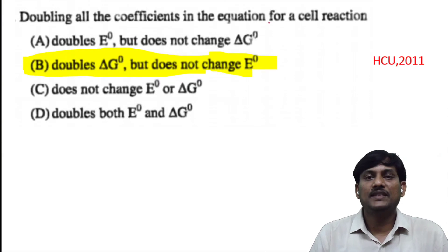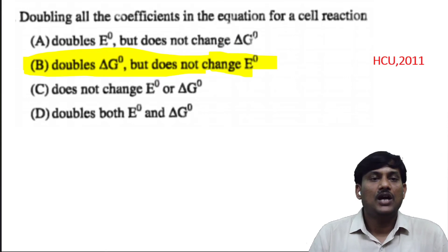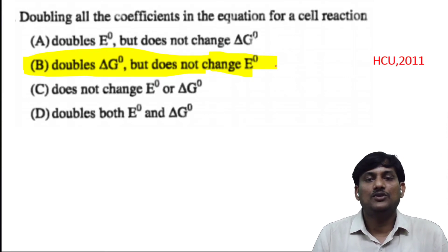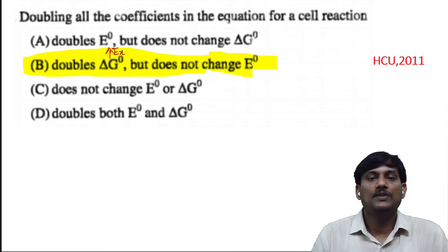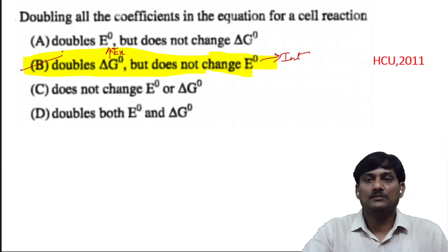Doubling all the coefficients in the equation for a cell reaction: as already explained, there is a doubling of ΔG° but no change in E°, since ΔG° is an extensive property and E° is an intensive property. So B is the correct option.